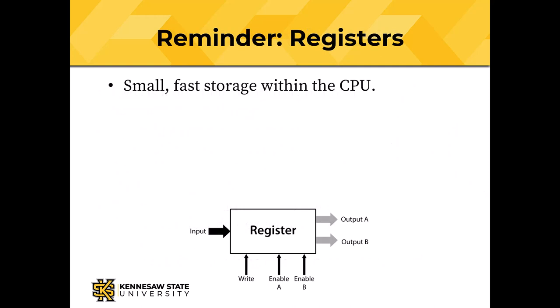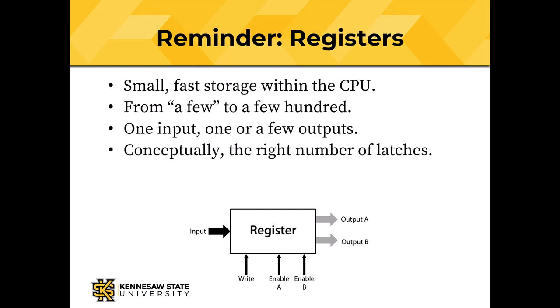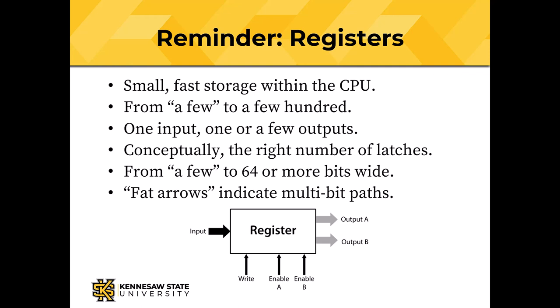Let's remind ourselves about registers. Registers are small, fast storage within the CPU. A particular computer may have from a few to a few hundred of them. Registers will have one input and one or a few outputs. Conceptually, a register is the right number of latches, so a 64-bit register would have 64 latches inside it. The registers are from a few to 64 or more bits wide, and fat arrows indicate multi-bit paths.